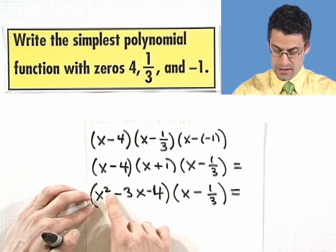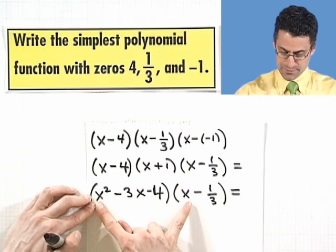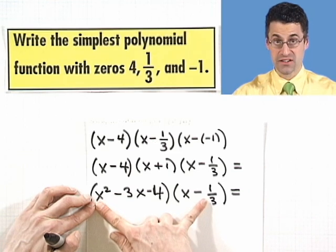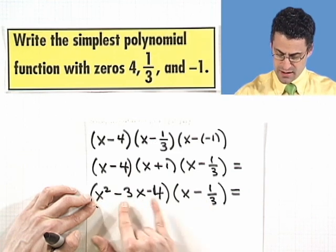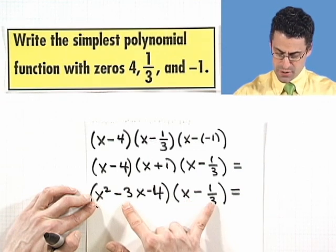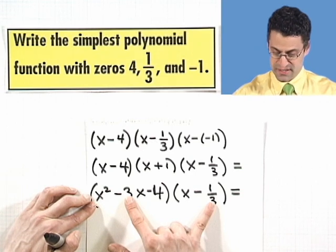Every term here has to be multiplied by this and then this. So I see x³ minus 1/3 x². Then I jump to here and I see this product, negative 3x². And then this product, which is a negative times a negative is a positive. 3 times 1/3 is 1, so plus x.